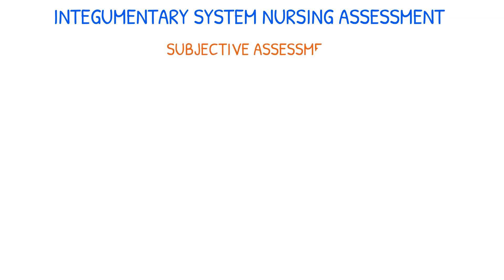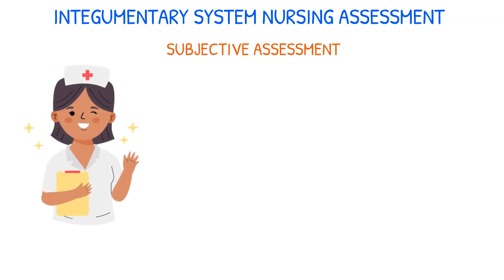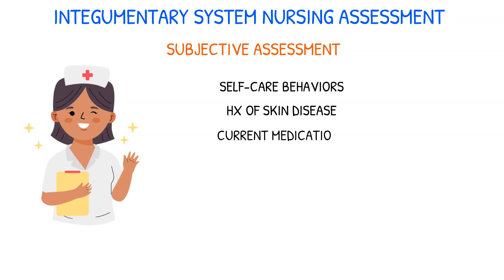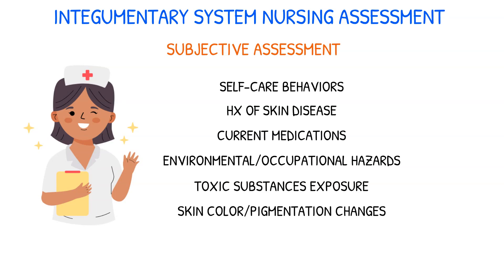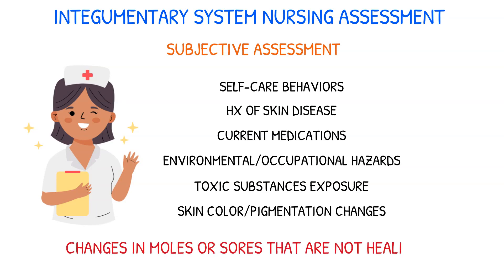Nursing assessment of the integumentary system includes both subjective and objective data. During the subjective assessment phase, you should ask the patient about their self-care behaviors, history of skin disease, current medications, environmental or occupational hazards, any toxic substances exposure, skin color or pigmentation changes, and changes in moles or sores that are not healing.